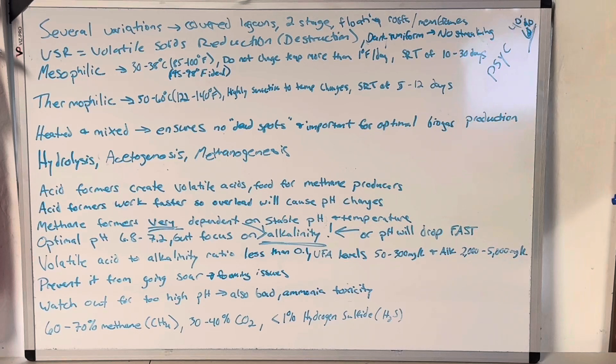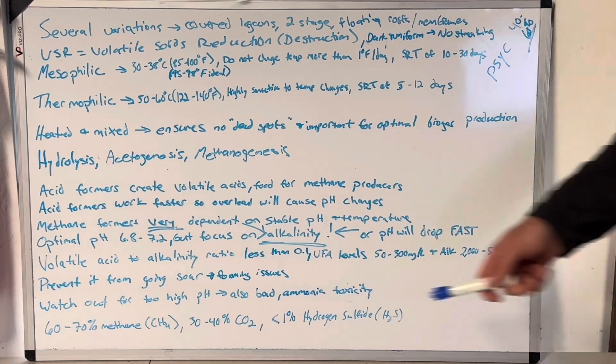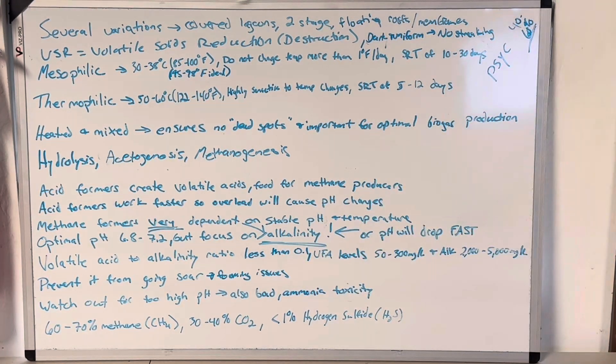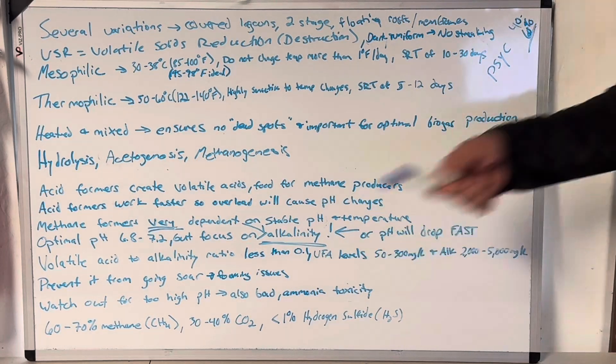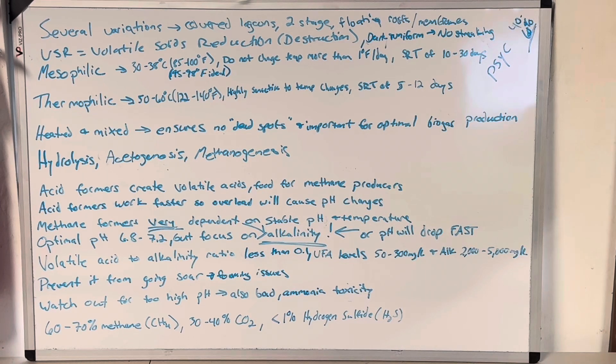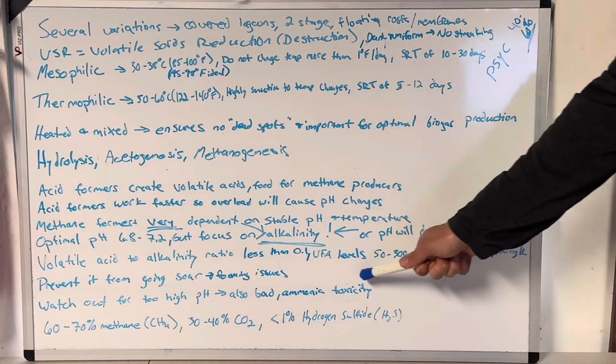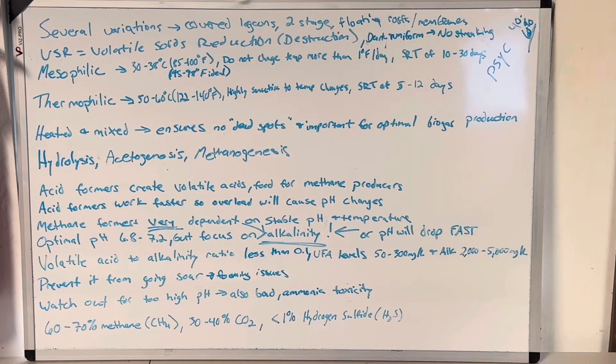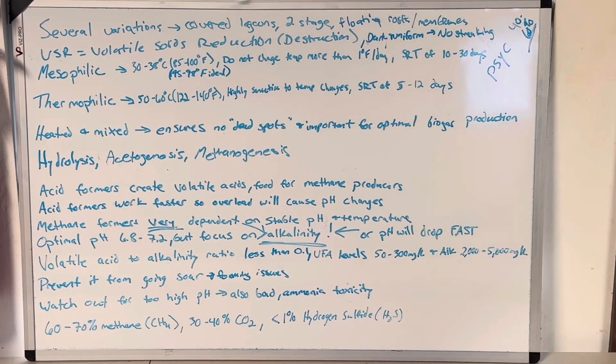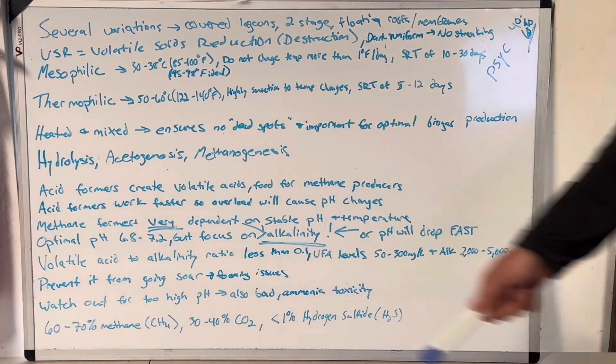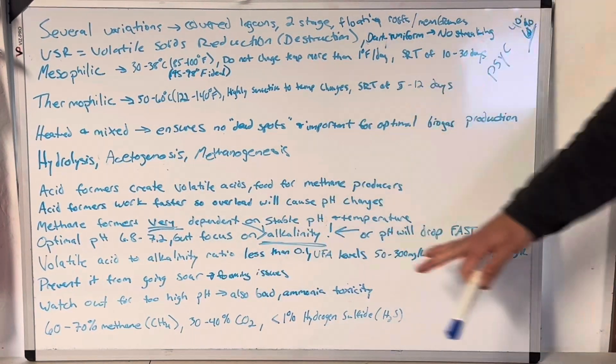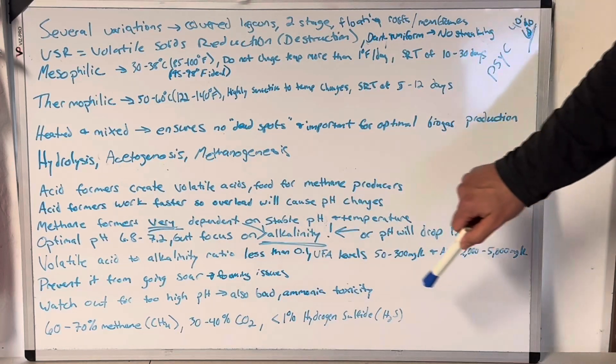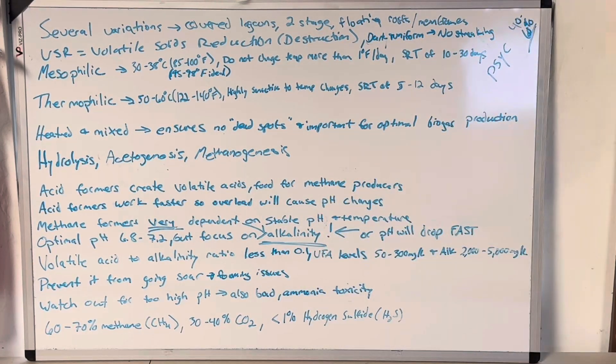So that's kind of the same thing here. Your volatile acid to alkalinity ratio should be less than 0.1. WEF study guide I read the other day said 0.1 to 0.35. I disagree with the 0.35. I think that seems a little high. From my experience, you want 10 times the alkalinity than the acid in the digester. You want a lot of runway on your buffer. Volatile fatty acid levels from 50 to 300 milligrams per liter and an alkalinity level of somewhere between 2000 and 5,000 milligrams per liter is good. This prevents it from going sour and inhibiting methane production, screwing up your gas ratios. And it also helps prevent foaming issues.